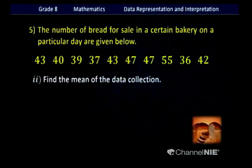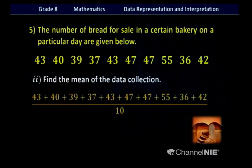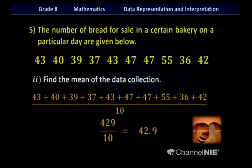Find the mean of the data collection. Add all the values together and divide the sum by the number of data. Here we have 10 data. The sum of all values is 429. When divided by 10, the mean is 42.9.